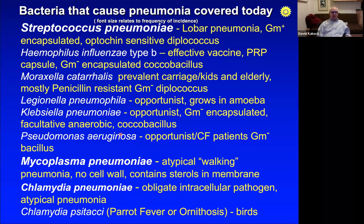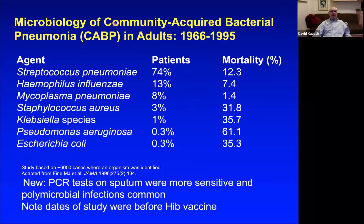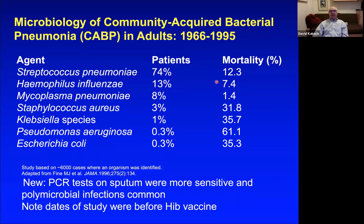This slide doesn't include all pneumonia-causing organisms — two others are shown here with their mortality data. The most common pneumonias — Strep, Haemophilus, and Mycoplasma — represent about 95% of all pneumonias. Their mortality isn't that high because these are non-opportunistic infections; anyone can get sick from them, and our immune systems can generally handle them.